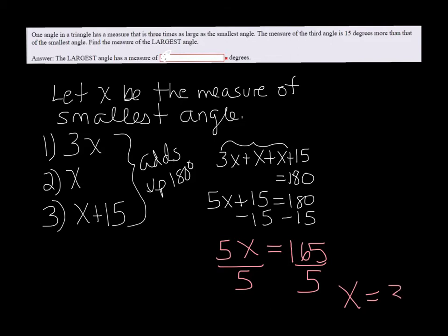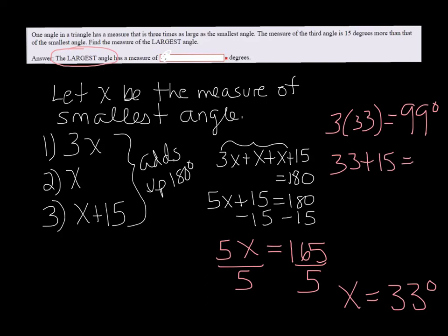So the smallest angle is 33 degrees. However, it's asking for the measure of the largest angle. So the largest, well, we don't know what that is, but we know x is the smallest. Three times 33, which is the first angle that we have here, is 99 degrees. And then 33 plus 15 would give us 48 degrees.